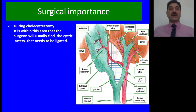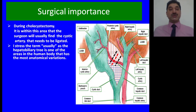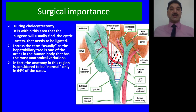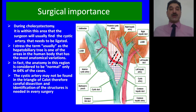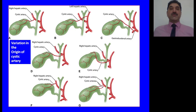During cholecystectomy, it is within this area that the surgeon will usually find the cystic artery that needs to be ligated. As shown in this animation, the surgeon applies two ligatures and cuts the vessel in between the ligatures. I stress the term 'usually,' as the hepatobiliary region is one of the areas in the human body with the most anatomical variation. In fact, the anatomy in this region is considered normal in only 64% of cases. The cystic artery may not be found in the triangle of Calot; therefore, careful dissection and identification of structures is needed in every surgery.